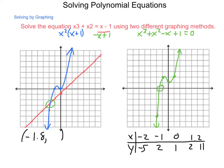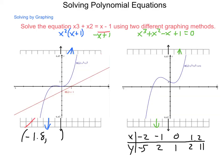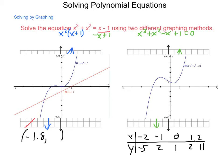Pulling this up on a graphing calculator, we end up with a graph, and using the trace feature, we come out with an exact solution at x equals approximately negative 1.839 — both for the zero of the combined equation and for the intersection of the two original equations. The y-value for the zero method is 0, while for the intersection it is approximately negative 2.839. Our solution is that x value, so we have multiple ways of solving these algebraically and graphically.